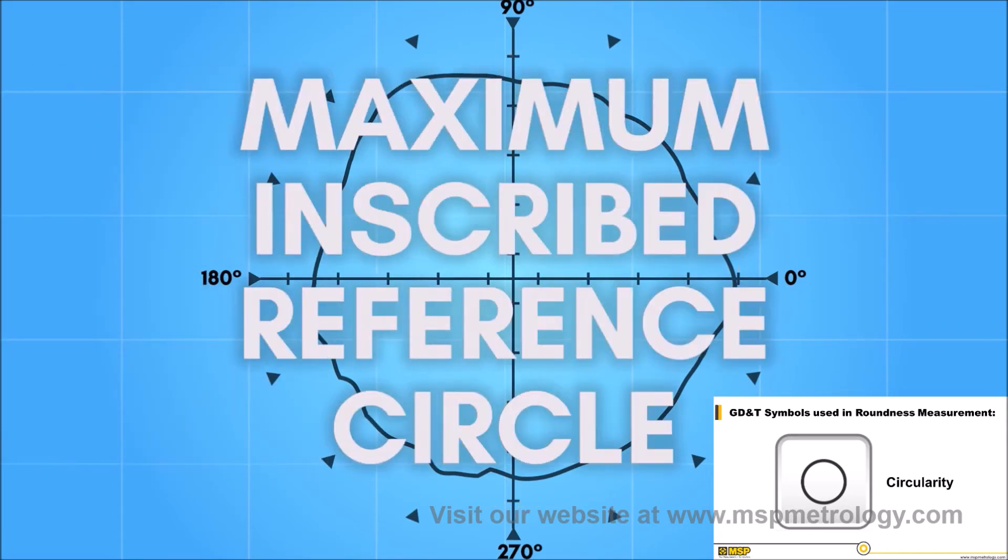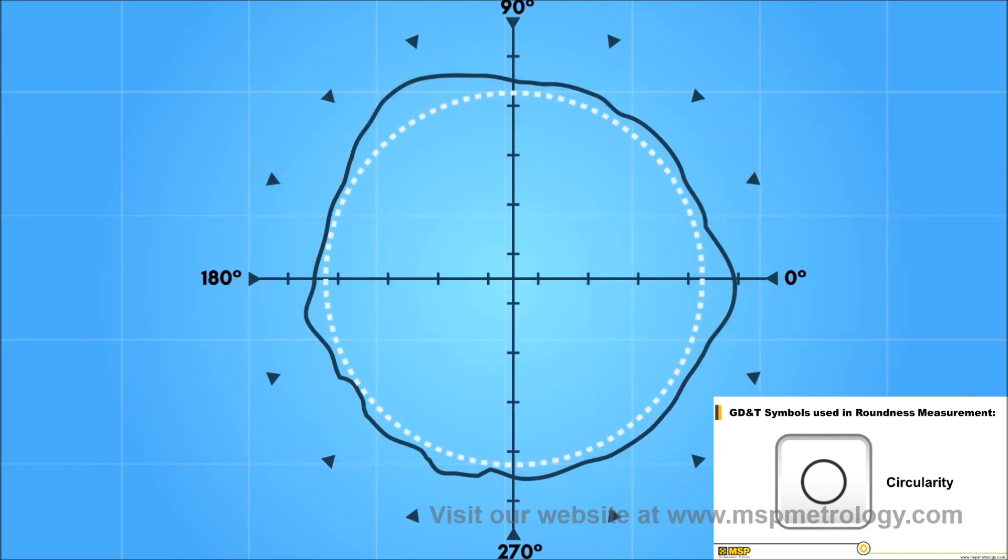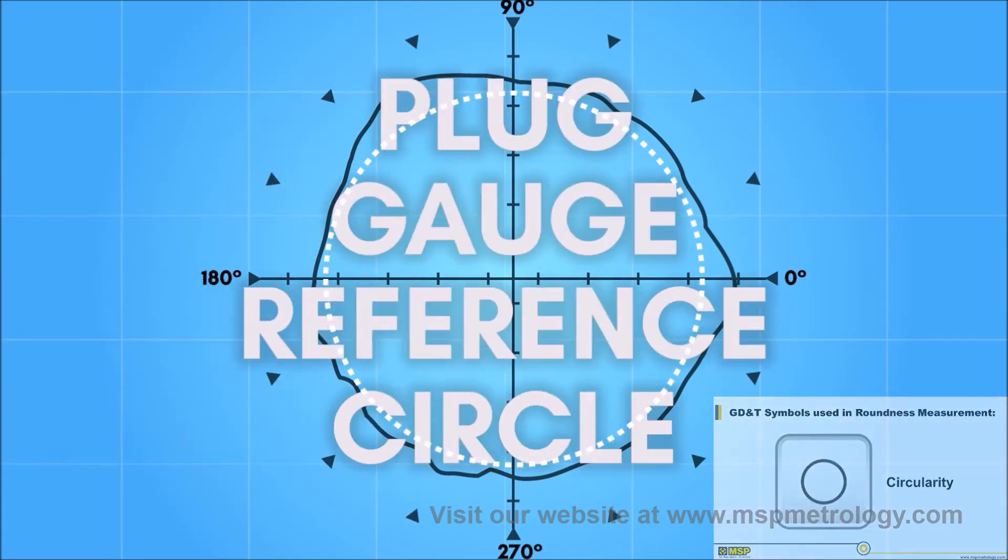A maximum inscribed reference circle is the largest circle that can be enclosed by the data. The out of roundness is quantified as the maximum deviation of the data from this circle. This is sometimes known as the plug gauge reference circle.